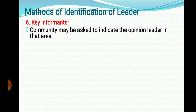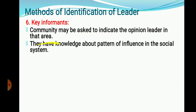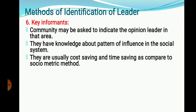The sixth method is Key Informants. The community or people are asked to indicate the opinion leaders of that area. The villagers are asked to point out the open leader, for example the progressive farmer, who guides people. These key informants have knowledge about patterns of influence in the social system — which patterns are useful to influence people and change their attitudes and behavior. This method is usually cost-saving and time-saving, as it allows direct identification of the leader.